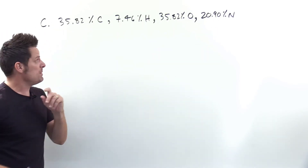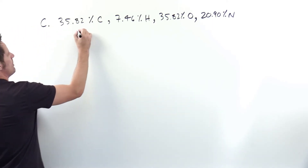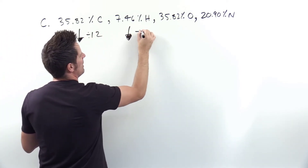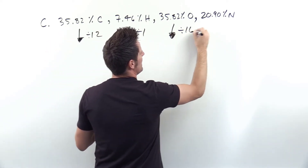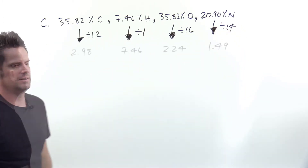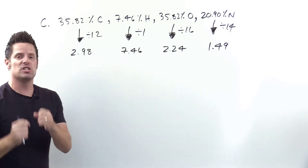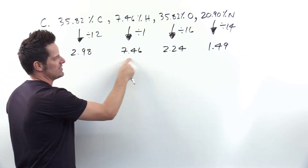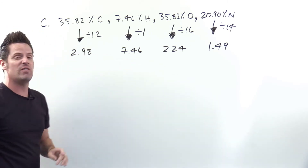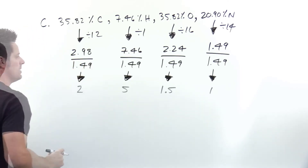As with parts A and B, we start in step one by dividing each of these percentages by the respective atomic weight of that element. Carbon weighs 12, hydrogen weighs 1, oxygen weighs 16, and nitrogen weighs about 14. When I carry out all of these in my calculator I end up getting the numbers shown here. In step two we find which of these four numbers is the smallest: 2.98, 7.46, 2.24, or 1.49. That's the 1.49. So I take each of these numbers and divide them all by 1.49, and I end up getting the numbers shown here.